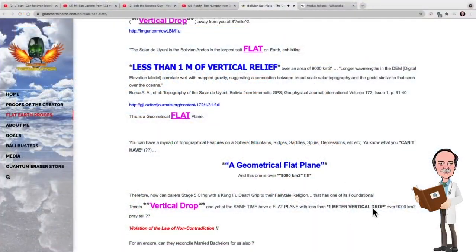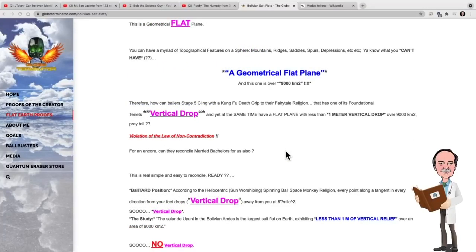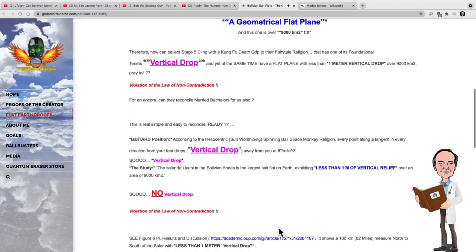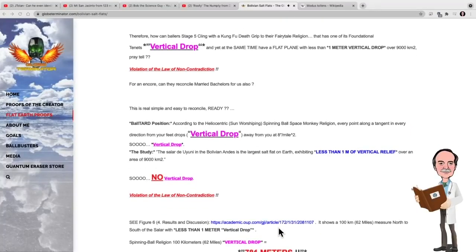Here, it says vertical drop. Here, it says vertical relief. Now, is this a new misunderstanding for him? No, it isn't. Let's go ahead and have a quick look at a video I did a while ago on Google Earth as a flat Earth map.